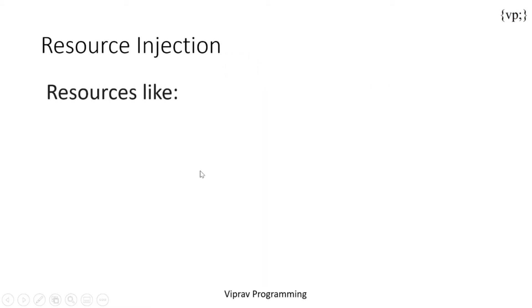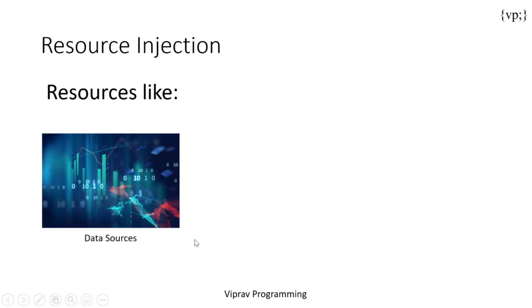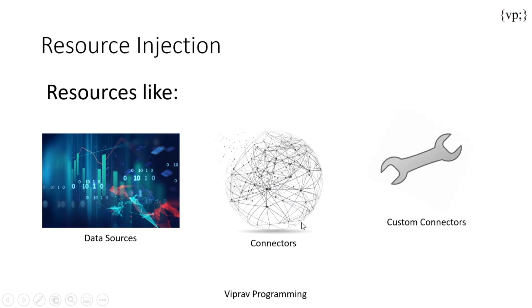Now there are a few resources that you can use that you can get like data sources, connectors, and custom connectors available in the JNDI namespace, which means that all of these need their own JNDI name.